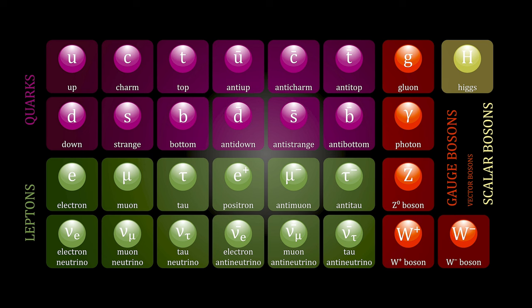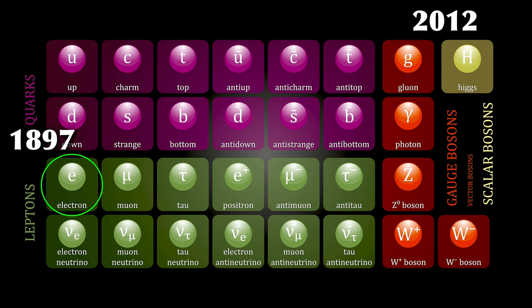The electron is a vital part of all atomic models ever since. Essentially, all of chemistry is just what electrons do inside atoms. And actually, it turned out to be the first elementary particle we ever found. It's still there today, right in the standard model of particle physics. It took us from 1897 with the electron up until 2012 with the Higgs boson to find all these particles in experiments — over 100 years.